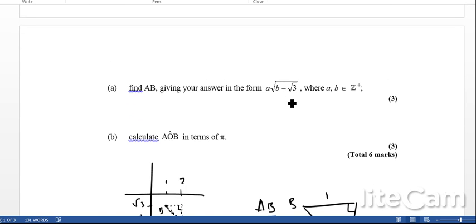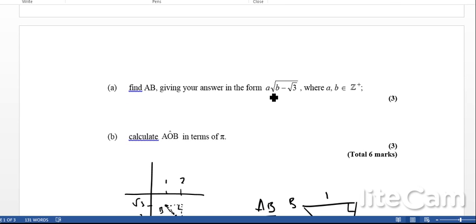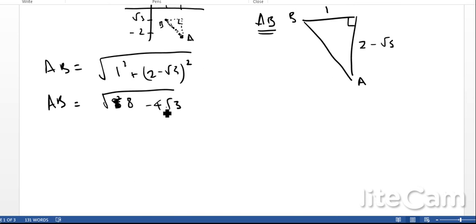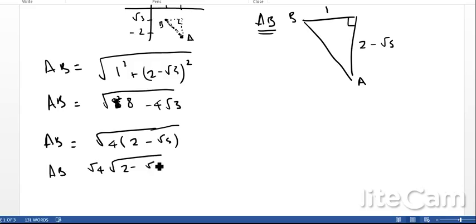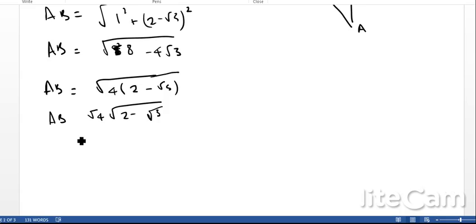It wants me to have a coefficient on the outside and just √3 on the inside. If I take out the factor of 4, I'm going to have 4(2-√3). Then I can take this 4 outside, so I have √4·√(2-√3), which simplifies to AB equals 2√(2-√3).